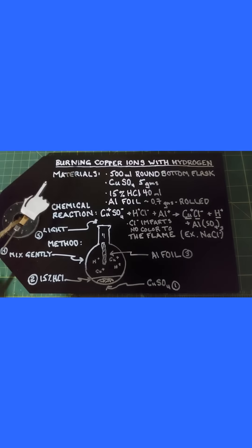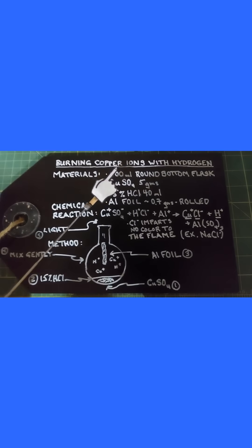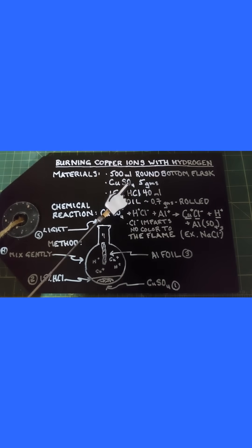We are going to look at a pretty unique reaction that's rather beautiful in this video. It's basically burning copper ions with hydrogen. For our materials we need one 500 milliliter round bottom flask, copper sulfate 5 grams.